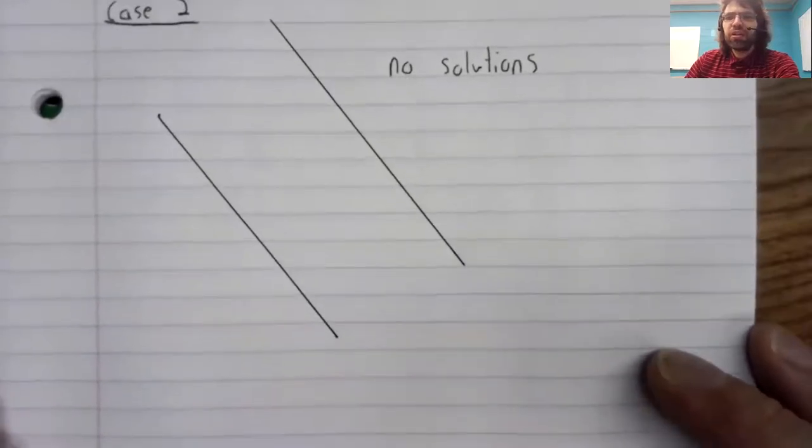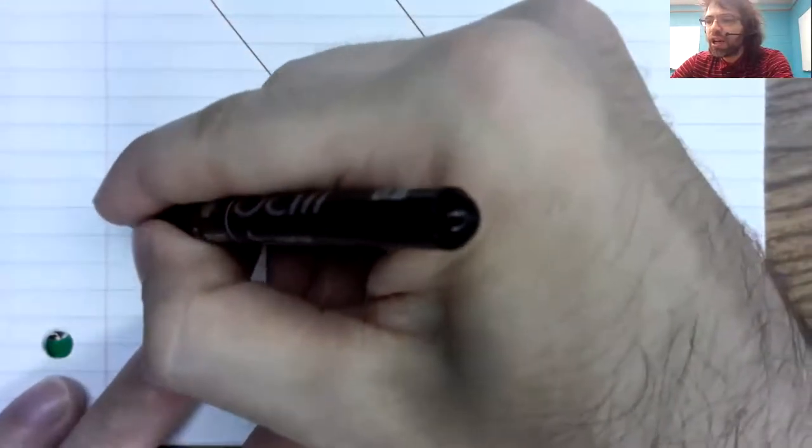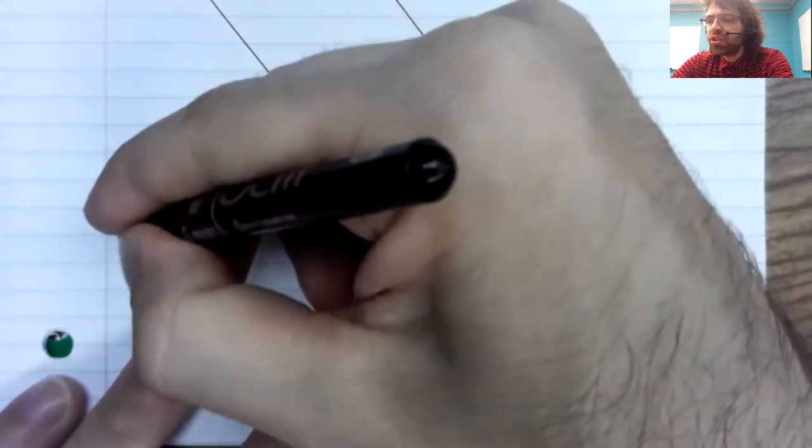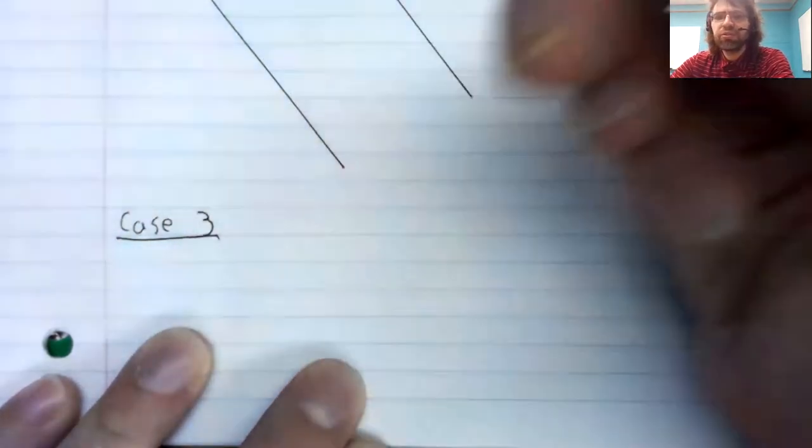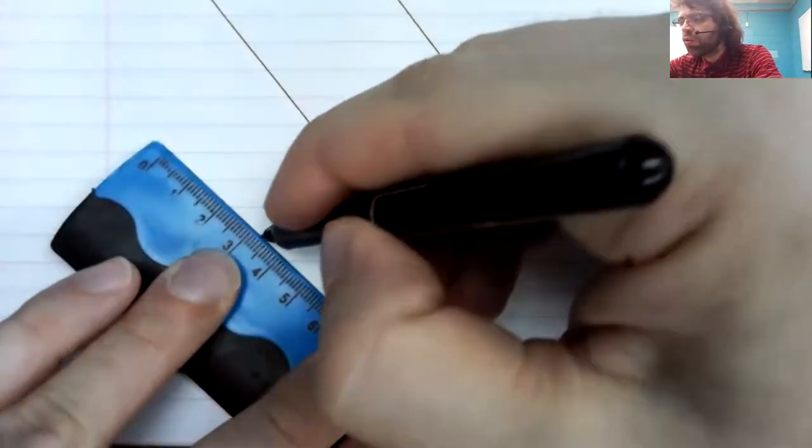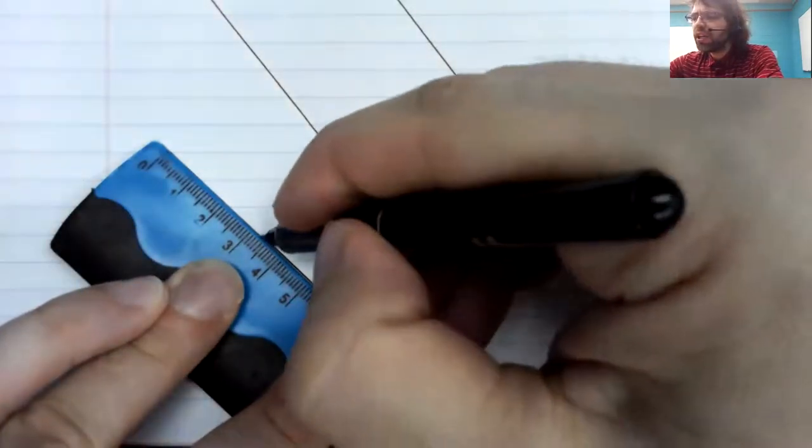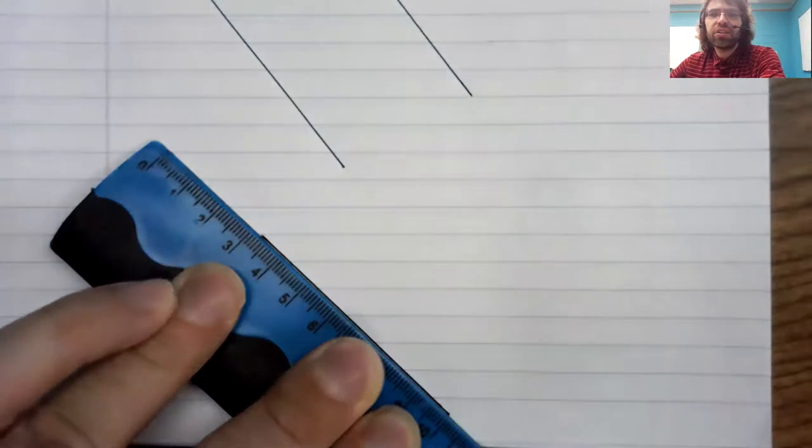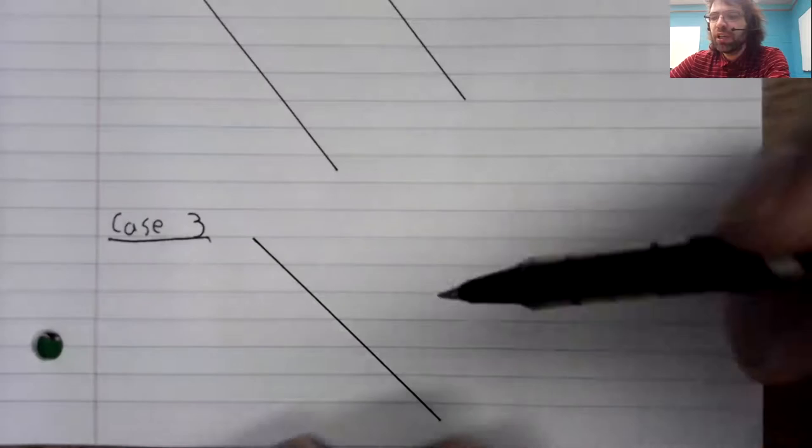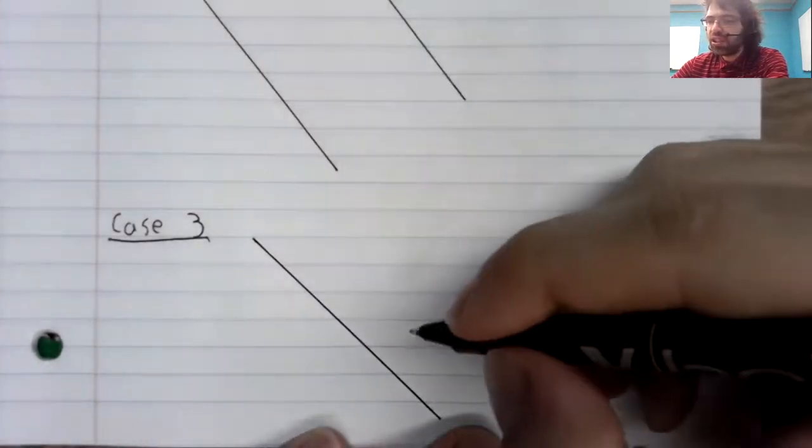Offhand, you might think those were the only two cases, either the lines are parallel or they aren't. But there's a third case. So we draw one of the lines, and then we draw the second line, and they're the same. Now these two lines intersect infinitely often.